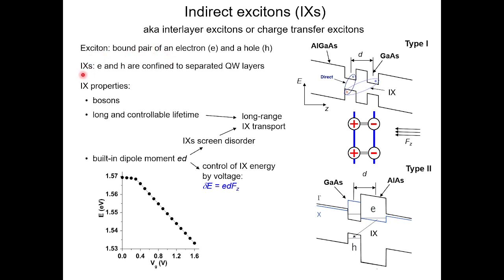There's also a special thing called an indirect exciton, which we write as IX, where the electron and hole are confined to separate quantum well layers. In this diagram, the horizontal axis is depth inside a material, and the vertical axis represents the energy an electron can exist at at that depth. The slant is due to an applied electric field. These dips are quantum wells, where different materials have different band gaps. Aluminum gallium arsenide has a wider band gap, so electron energies are higher, while regular gallium arsenide has a smaller band gap, so electron energies can be lower.